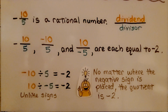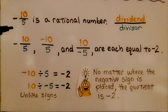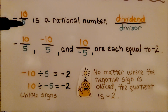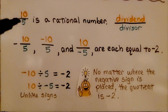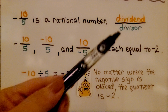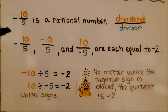Here we have a negative ten-fifths. Negative ten-fifths is a rational number. A rational number can be expressed as a ratio of two integers — we have an integer in the numerator and an integer in the denominator — written as a fraction as long as the denominator is not zero. We have the dividend over the divisor, because fractions are division problems.